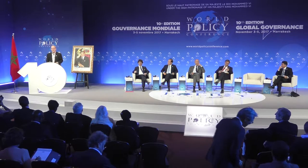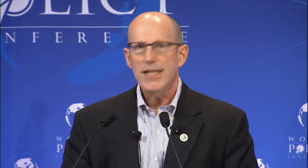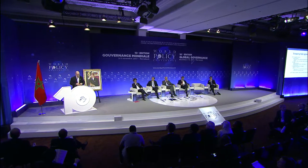The Trump administration is also scrapping trade agreements. We are renegotiating NAFTA. Dick Cooper pointed out yesterday that some of that is a constructive agenda — updating. But what Dick didn't mention were the bad ideas we heard some about this morning: a five-year sunset provision, which basically undercuts the idea of having a trade agreement because it means that companies cannot invest with any certainty about the rules of the game. And tightened rules of origin, particularly in automobiles — the rules of origin that the United States is proposing on automobiles are designed to disrupt the existing supply chains.